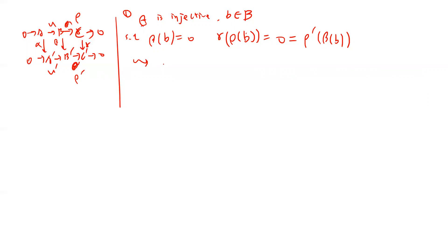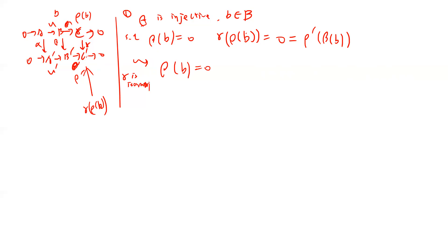From γ(ρ(b)) = 0 and the fact that γ is an isomorphism (in particular injective), we conclude that ρ(b) = 0. So ρ(b) is in the kernel of ρ. By exactness of the short exact sequence, the kernel of ρ equals the image of μ.